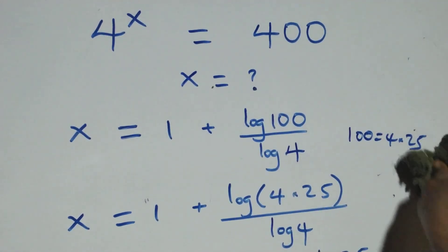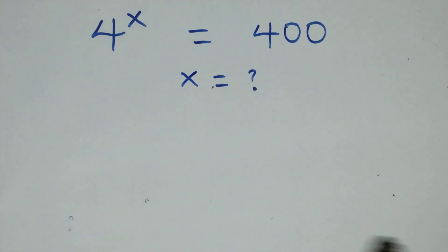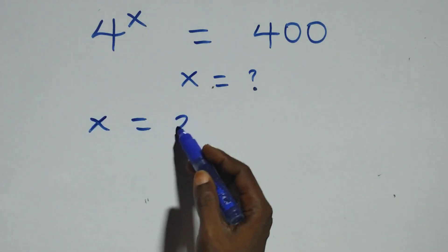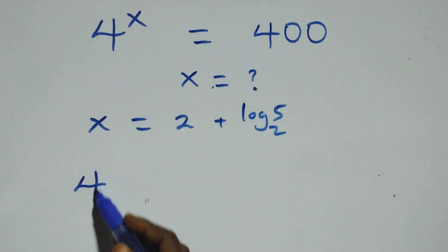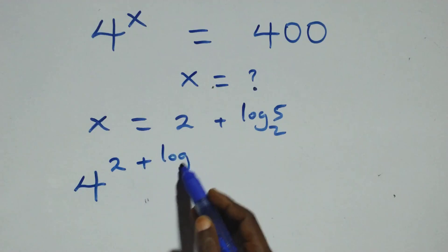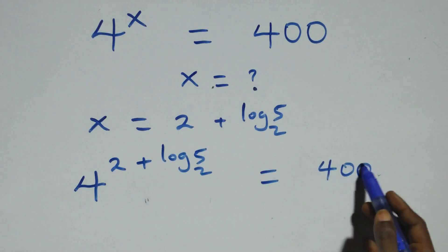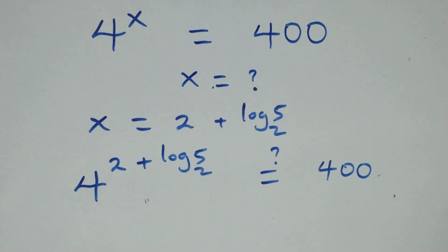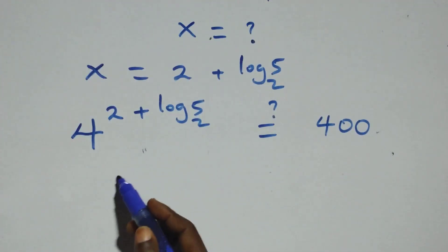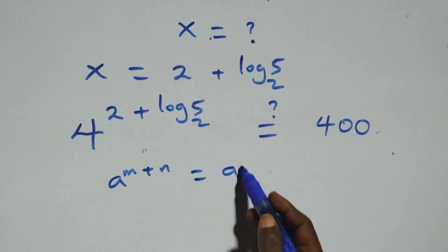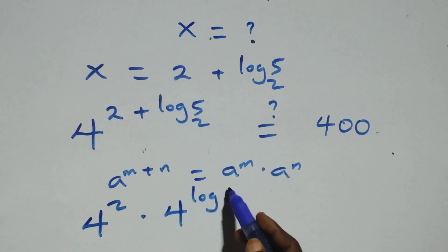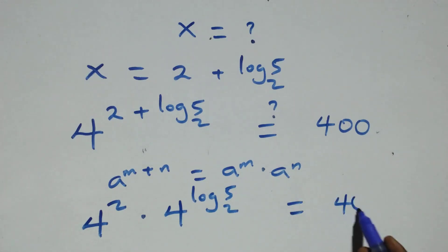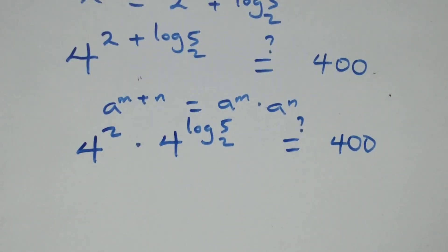We now substitute the value of x, which is 2 plus log base 2 of 5, back into the equation. We have 4 raised to power (2 plus log base 2 of 5) equals 400. Applying the law of indices — e raised to power (n plus n) is e raised to n times e raised to n — we get 4 squared times 4 raised to power log base 2 of 5 equals 400.